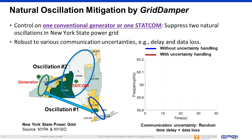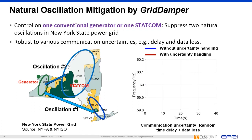Another application of Grid Damper to natural oscillations is in the New York State Power Grid. Grid Damper detected two natural oscillations — the west against the north, and the west against the south. The oscillations were quickly suppressed through Grid Damper's action on a voltage compensator, and control can also be executed through conventional generators.